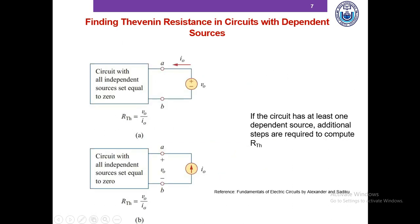Now if the circuit has at least one dependent source, additional steps are required to compute the Thevenin resistance. The Thevenin voltage still has to be computed in the exact same manner as just mentioned. But for Thevenin resistance computation, you need to perform an additional step — we cannot turn off the dependent sources.